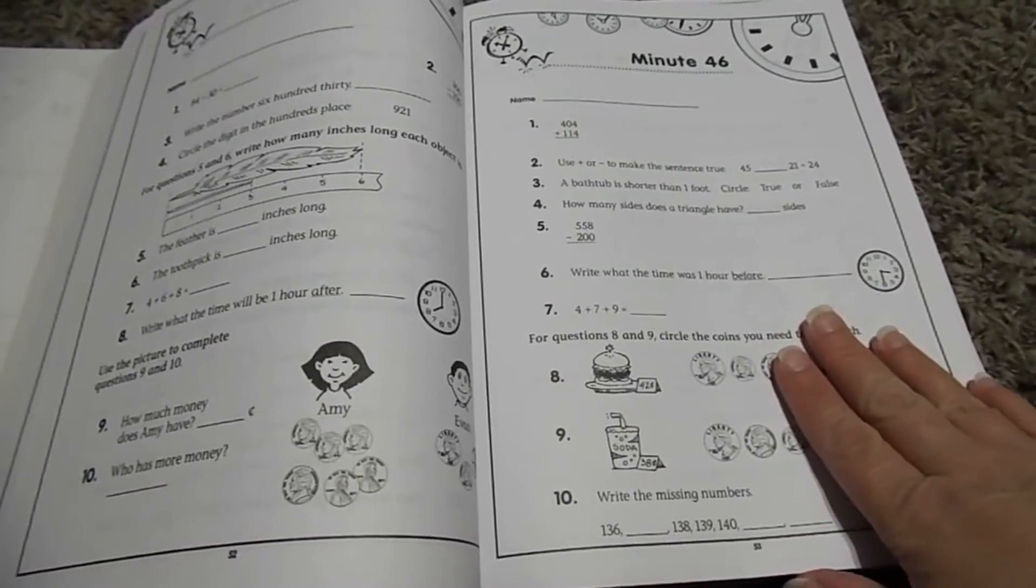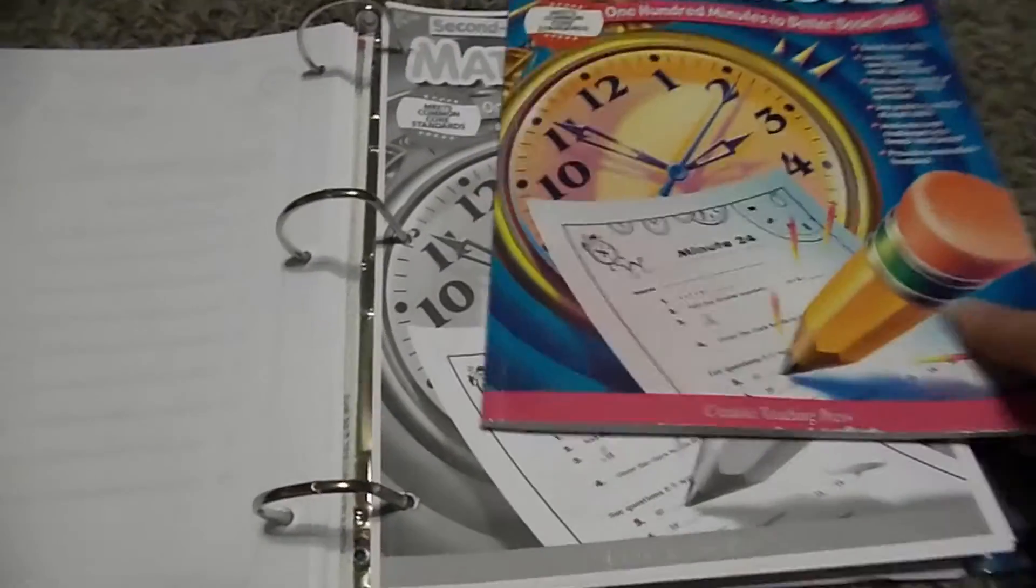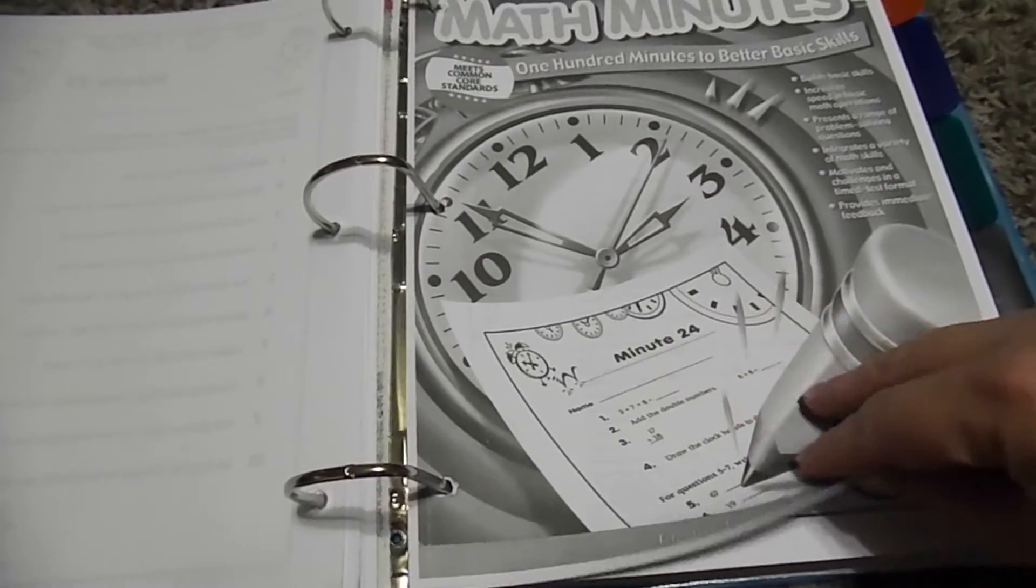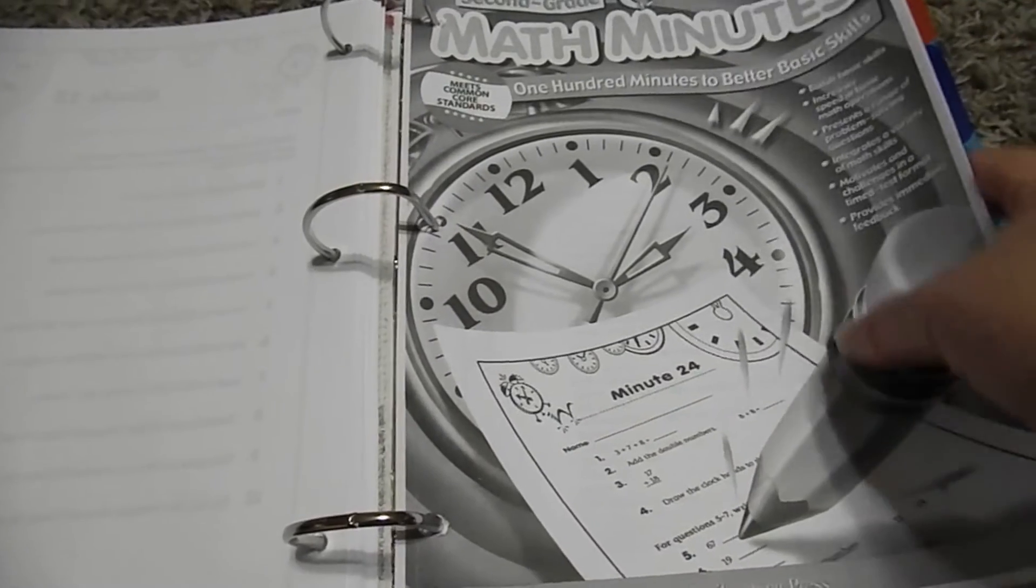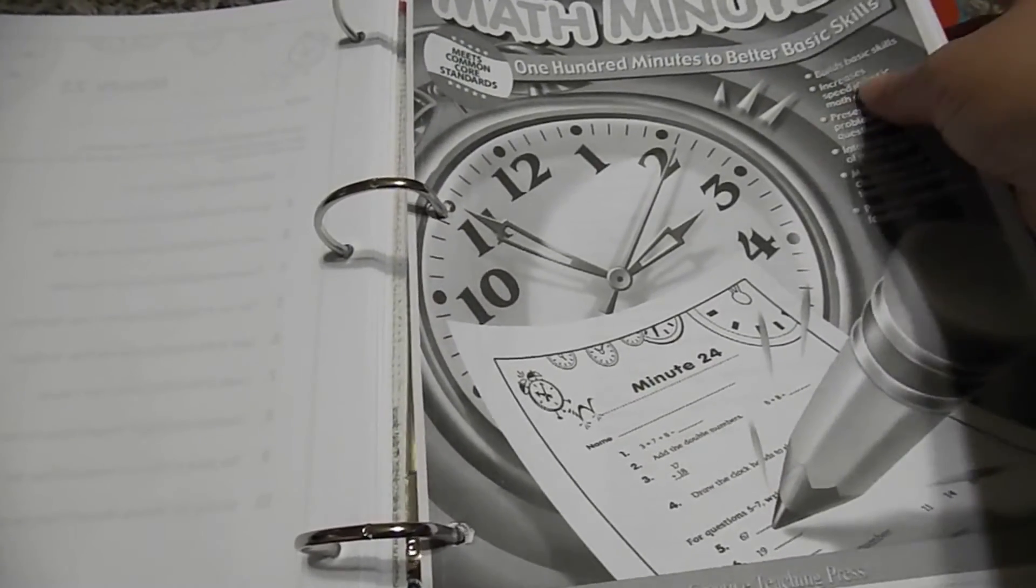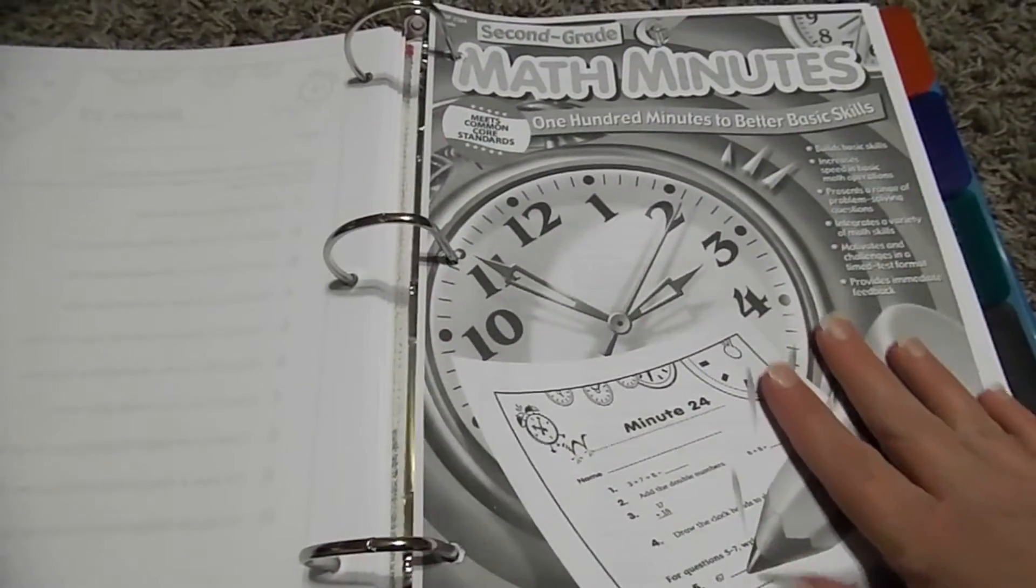So basically I take that and I put them into, I copied the front so I can remember what this was, and I put them into this section of our monthly binder. So that is our daily math minutes.